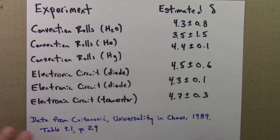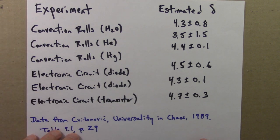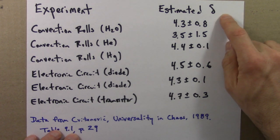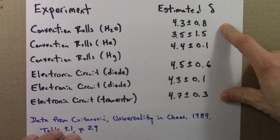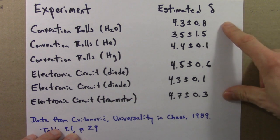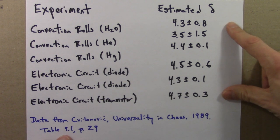But the bottom line is, lots of experiments have been done. They're not easy to do. Some of them are really hard. In order to do these, one can calculate a delta as defined before, and one gets values that are by and large consistent with this 4.669 number predicted by theory and seen in bifurcation diagrams from one-dimensional functions.